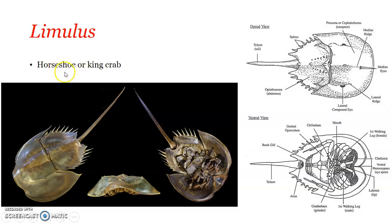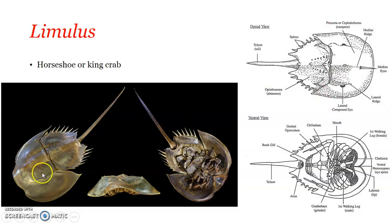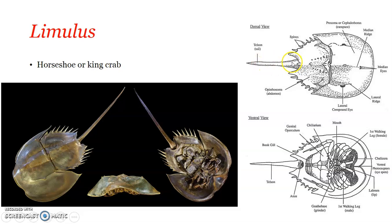Limulus is commonly referred to as the horseshoe crab or king crab. You can see the cephalothoracic region — the prosoma — which is an almost armor-shaped compact structure. There is one lateral eye visible here, and another on the other side, plus a median eye on the prosoma. This is the prosomal region, and this is the opistosomal or abdominal region, with a telson or tail spine associated with it.